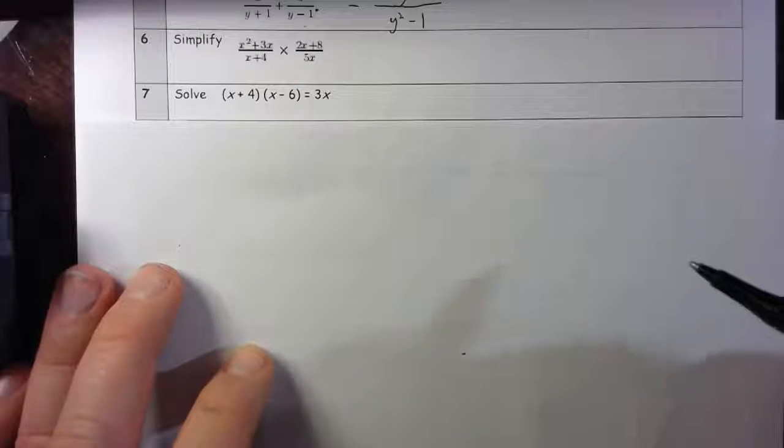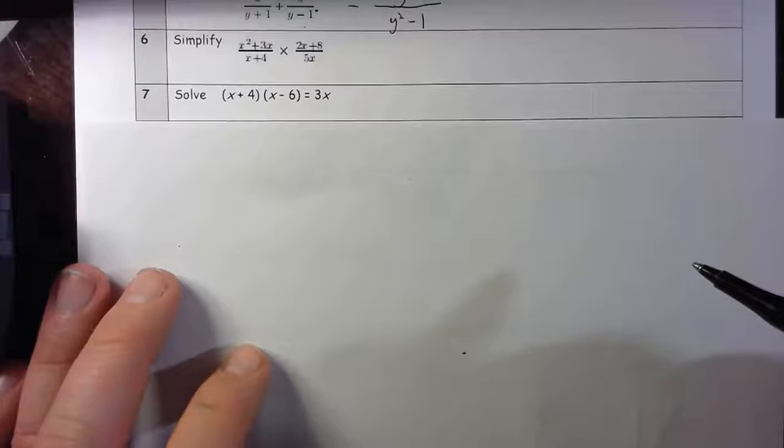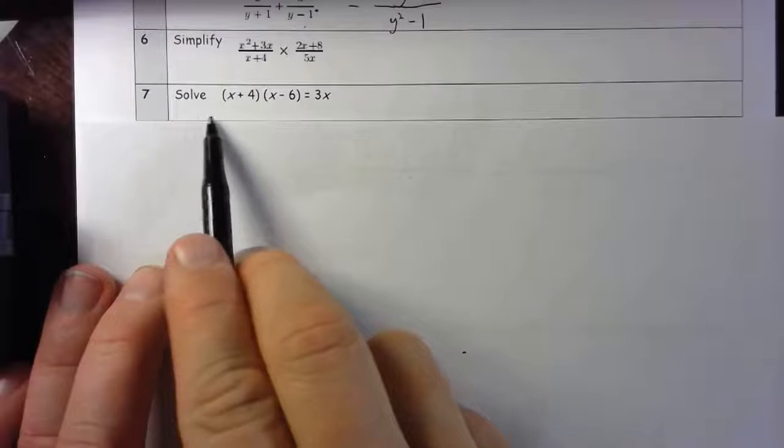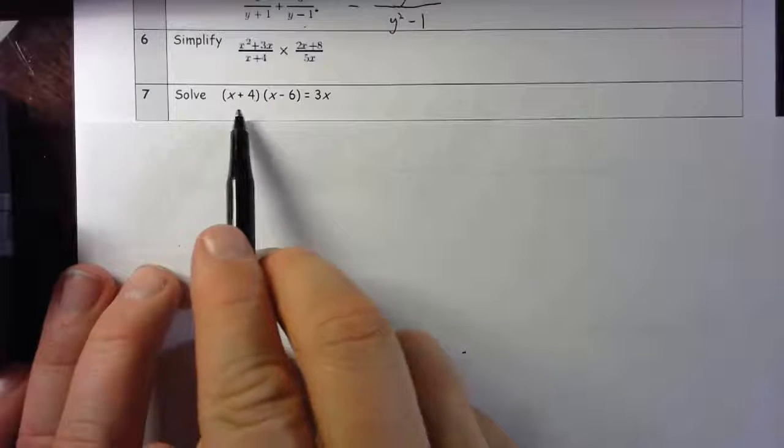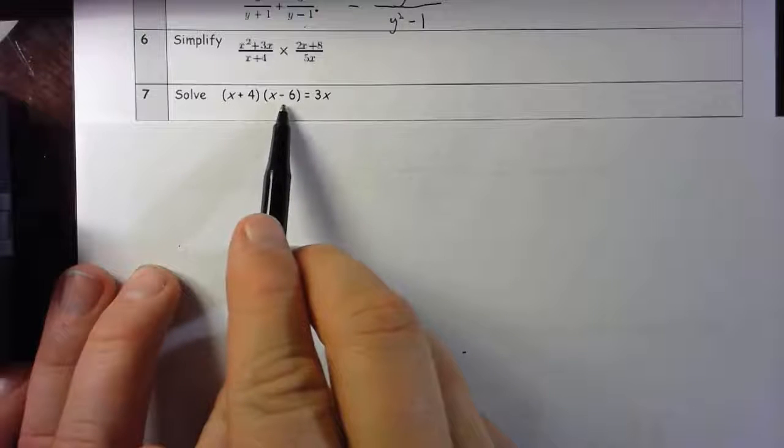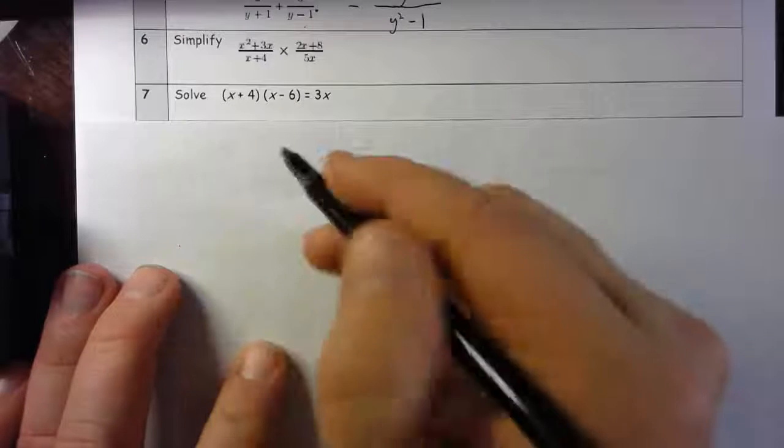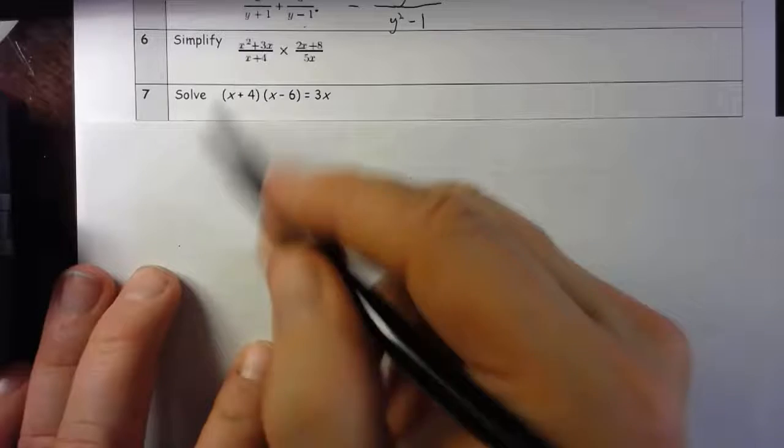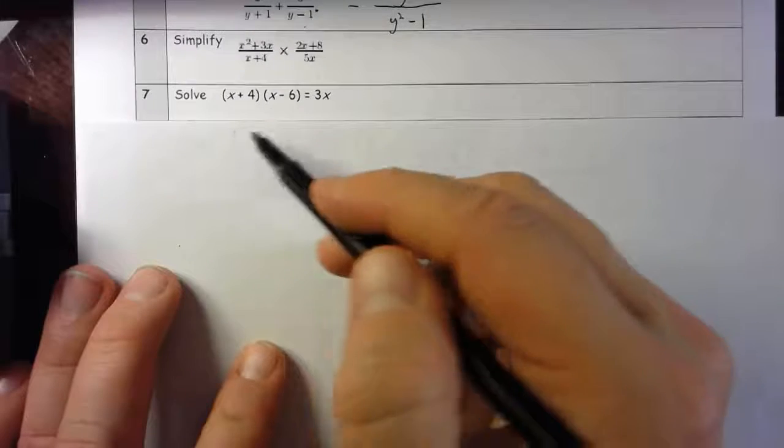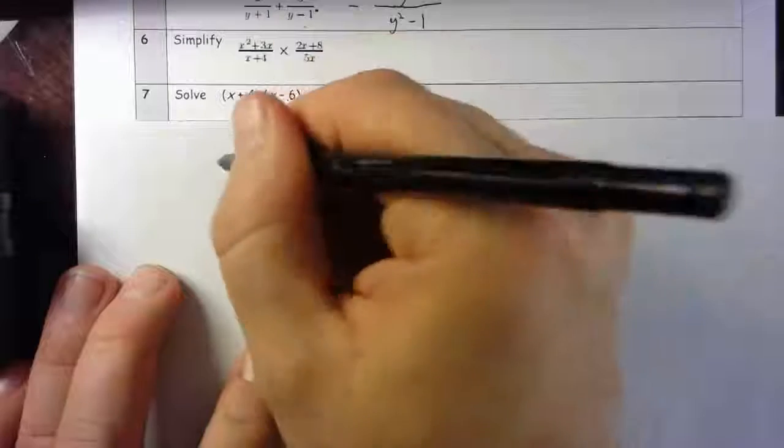Okay, let's have a look at question 7. I've got to solve this: (x + 4) times (x - 6) equals 3x. I think the straightforward logical step would be initially to expand that out as a first move.